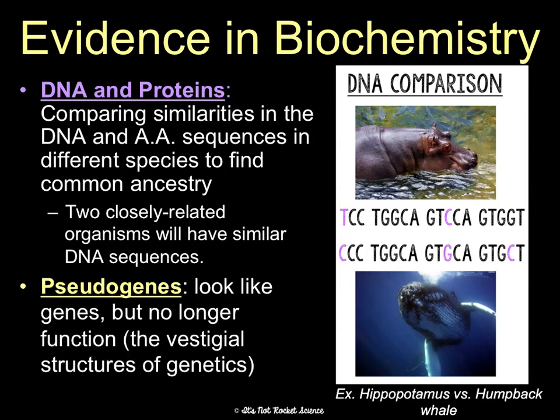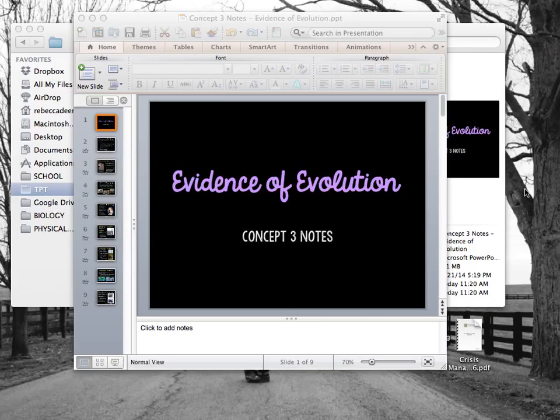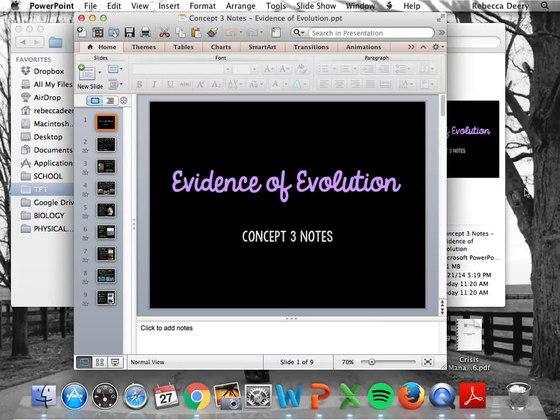We also have pseudogenes, which is pretty fascinating. These look like genes — they're just sections of your DNA — but they no longer function and don't code for any actual genes. They're kind of like the vestigial structures of genetics. And that is evidence for evolution in five different fields of science.